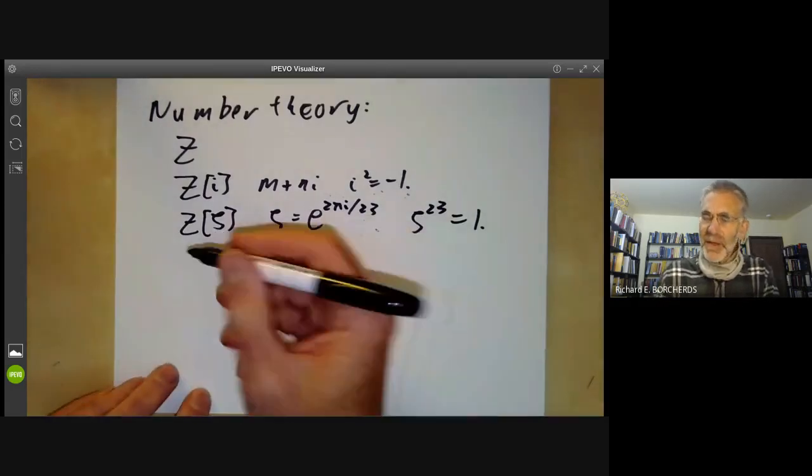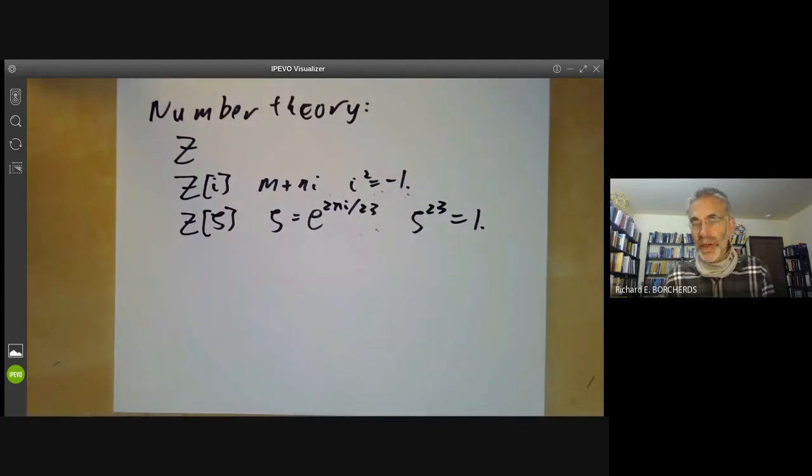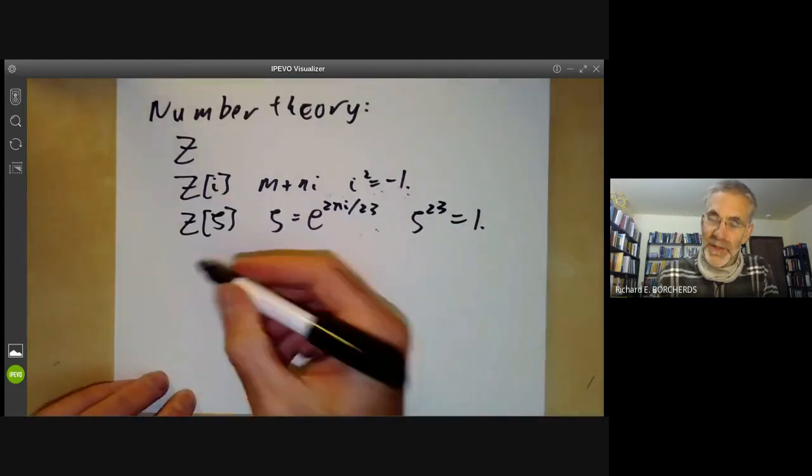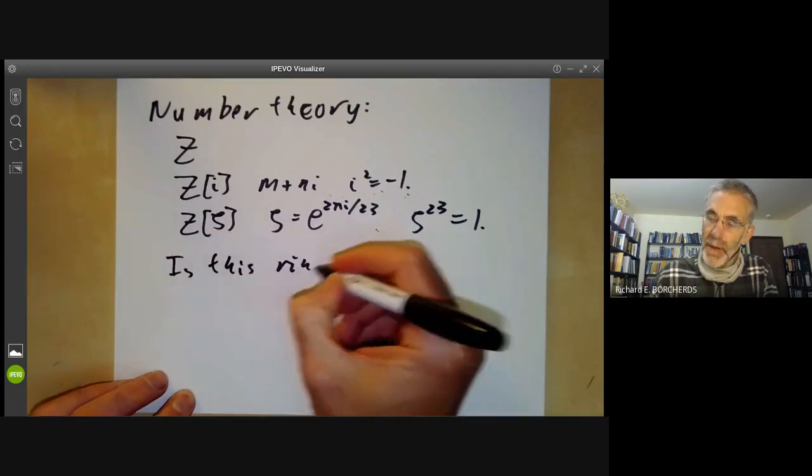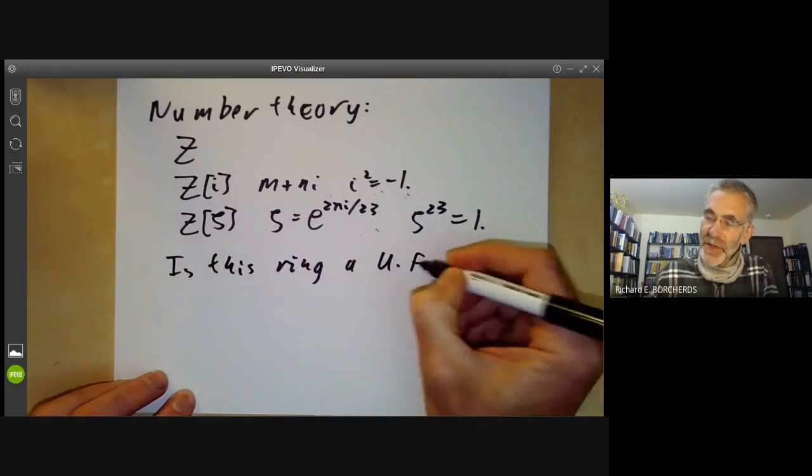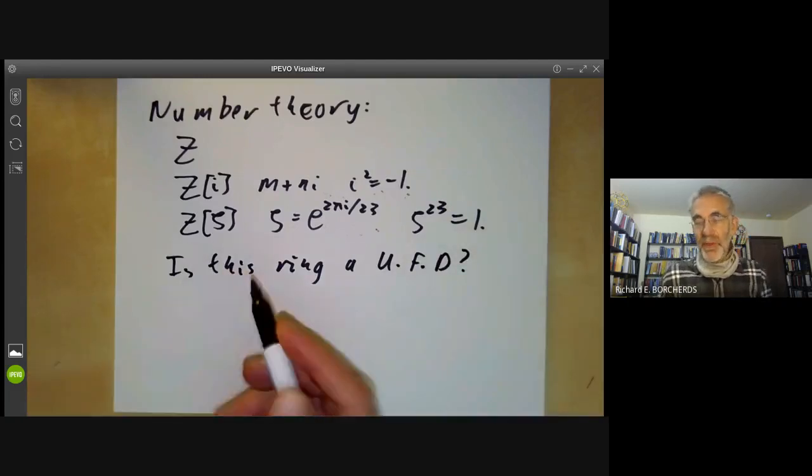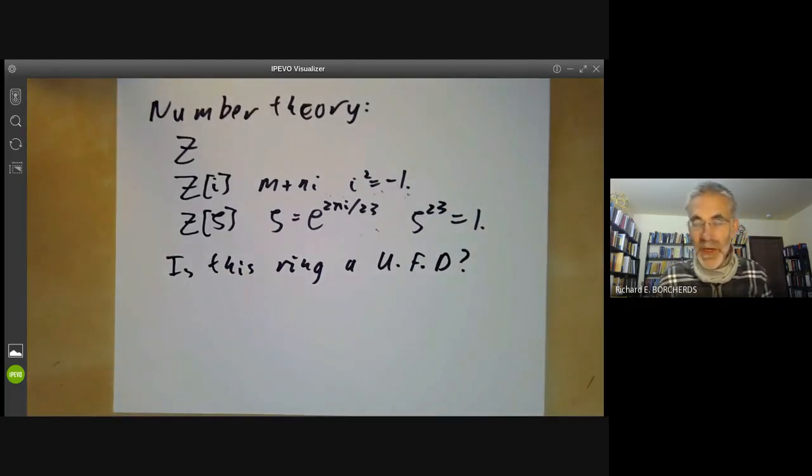A typical question that commutative algebra might ask about these rings is, is this ring a unique factorization domain? For example, can every element be uniquely factored as a product of primes up to order and units?